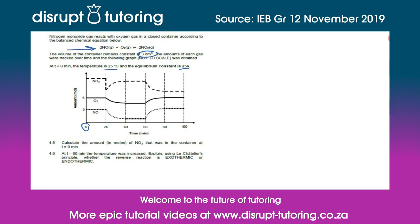Questions 4.1 to 4.4 are covered in a separate video. So question 4.5 asks us to calculate the number of moles of nitrogen dioxide present in the container at time t equal to zero. If we look at our graph we can see that the number of moles of the reactants are given but not the number of moles of the product.